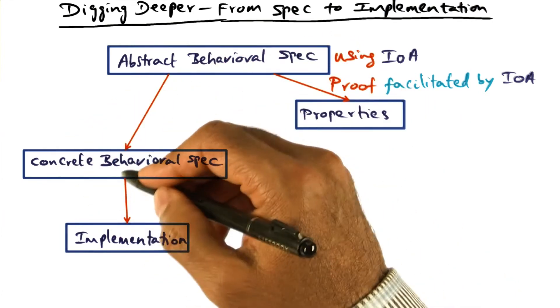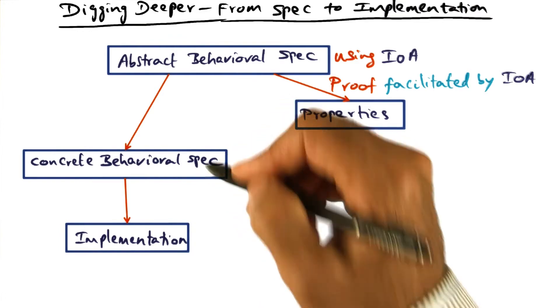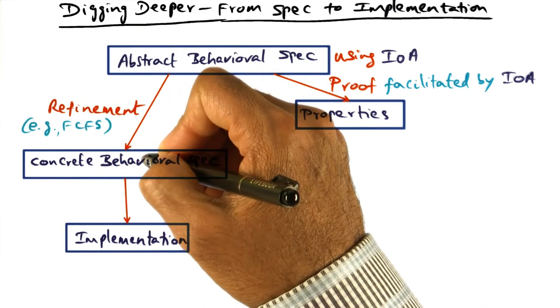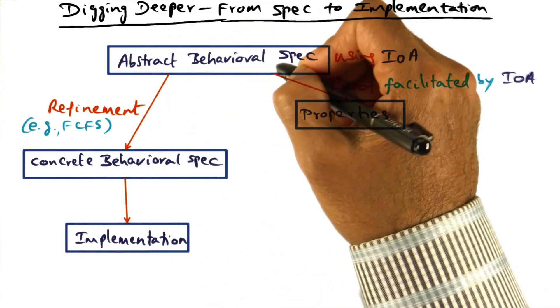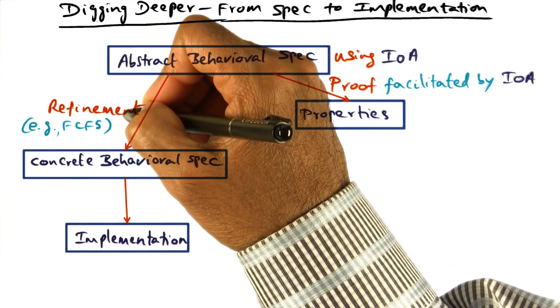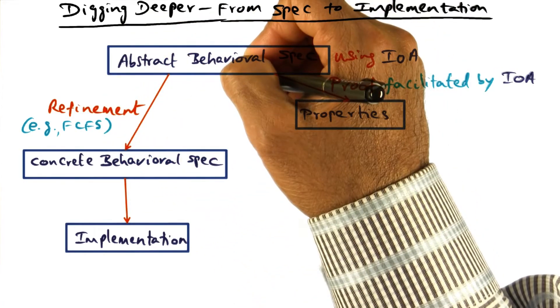The next step is getting to a concrete behavioral spec. We get to this concrete behavioral spec from the abstract behavioral spec through a whole set of refinements.